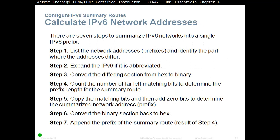There are seven steps to summarize IPv6 networks into a single IPv6 prefix. Step one: list the network addresses and prefixes, and identify the part where the address differs. Step two: expand the IPv6 address if it's abbreviated. Step three: convert the differing section from hex to binary. Step four: count the number of far-left matching bits to determine the prefix length. Step five: copy the matching bits and add zero bits to determine the summarized network address prefix. Step six: convert the binary section back to hex and append the prefix of the summary route.